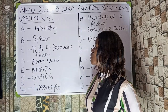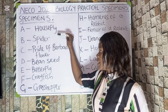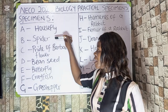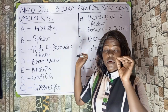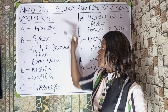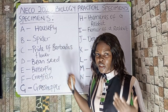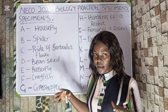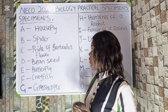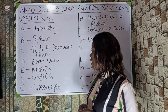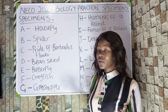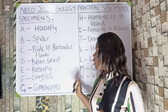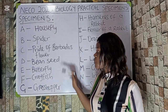Specimen A is housefly and Specimen B is spider. You may likely be asked about the observable features of these specimens — the way they look, their body stature, and so on. You may also be asked to state their economic importance.